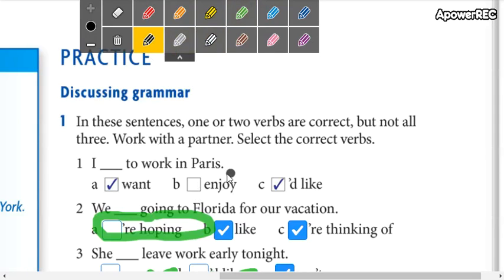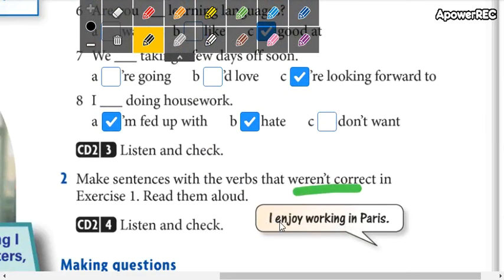Let's see one example: enjoy. If this option is not correct, how is the correct form? I enjoy to work in Paris? No, the correct form is I enjoy working in Paris. So this is the correct form.